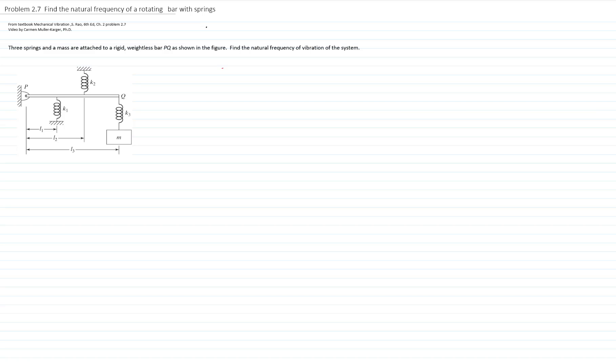In this video, we will solve problem 2.7 of the textbook Mechanical Vibration from Rao, 6th edition. This is part of chapter 2. My name is Carmen Müller-Garrier. We have three springs and a mass attached to the rigid weightless bar PQ, as shown in the figure, and we would like to find the natural frequency of vibration of the system.